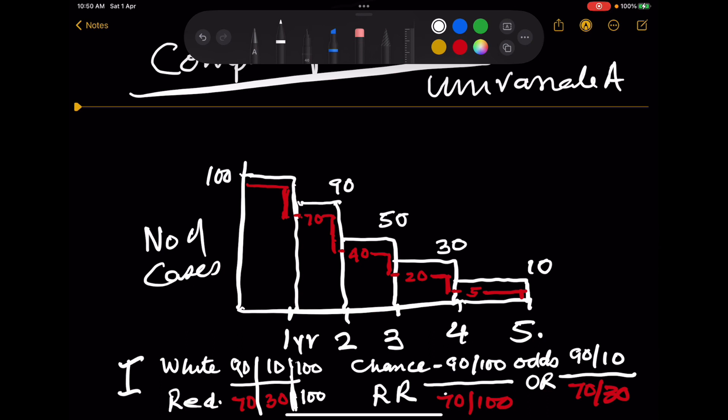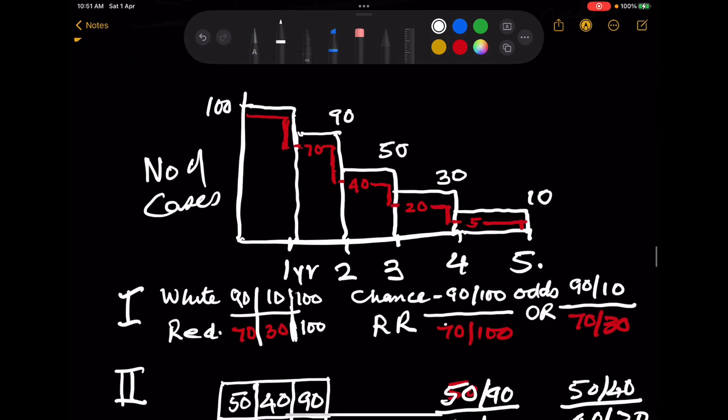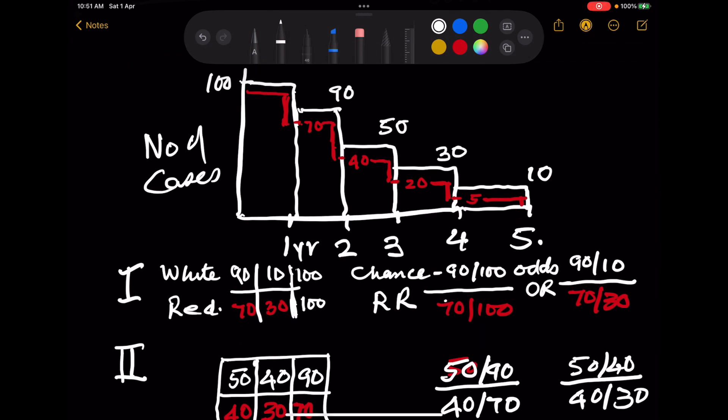So we draw two curves. In the first year 90 survived in the white curve and 70 survived in the red curve. In the second year 50 survived in the white curve and 40 survived in the red curve. Therefore we will have these two tables: 90-10-100 and 70-30-100 would become a 2 by 2 table.